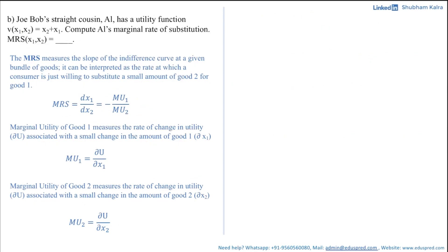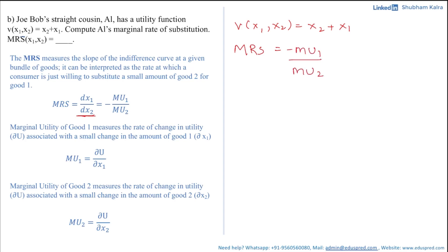Moving on to the next part: Joe Bob's straight cousin Al has a utility function v(x1, x2) = x2 + x1. We are asked to calculate Al's marginal rate of substitution. The definition remains the same — MRS measures the slope of the indifference curve at a given bundle, and mathematically it equals minus mu1 divided by mu2. So MRS equals minus mu1 divided by mu2.